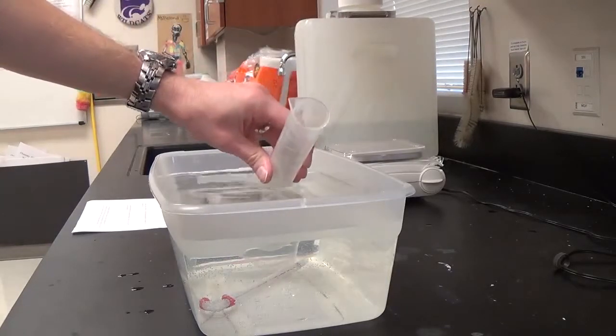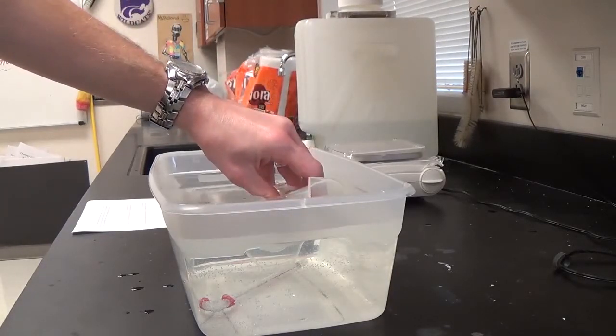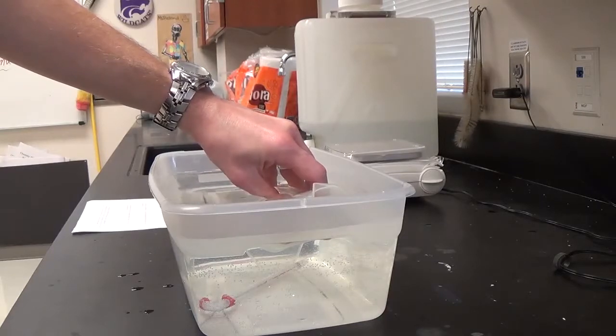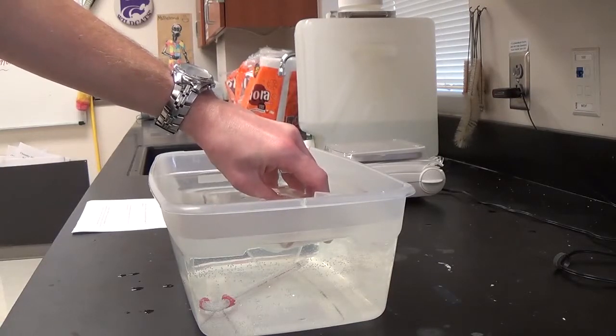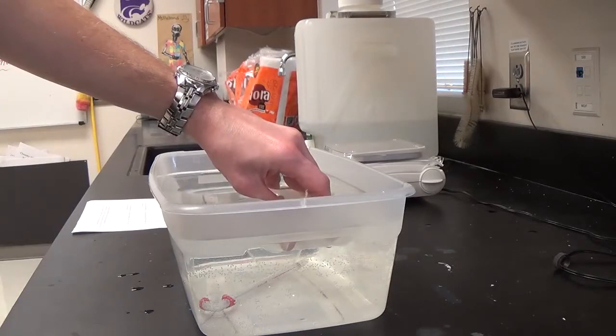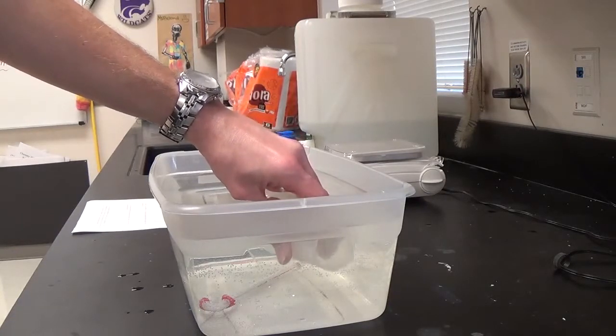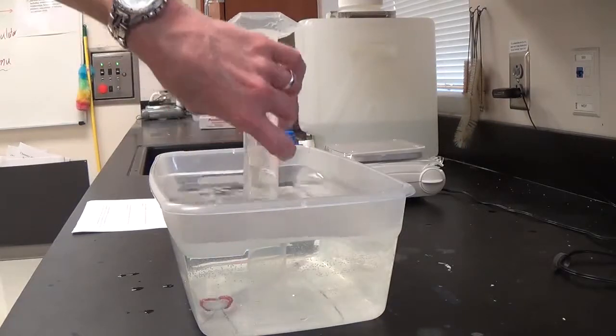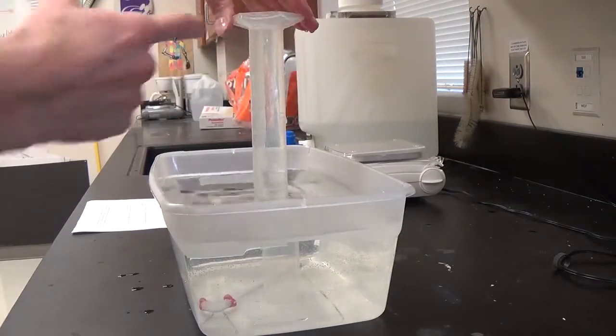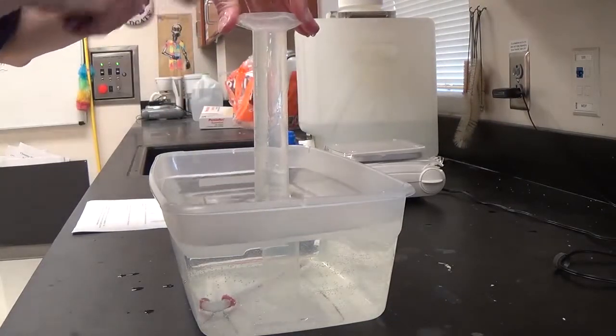Next, submerge the graduated cylinder into the water. Do it slowly and make sure that it fills with water completely so that there's no air trapped in there, because we want only butane in the graduated cylinder. Tip it up and keep the end under the water so that no air gets in, and check to make sure that there are no bubbles.